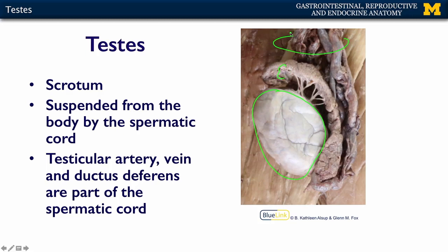There's a testicular artery, a testicular vein, and the ductus deferens that also live in the spermatic cord. That was all covered by Dr. Alsup in the reproductive MOOC.